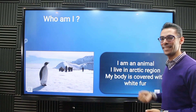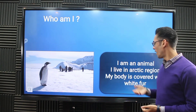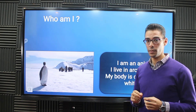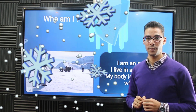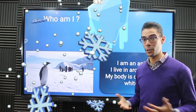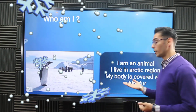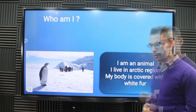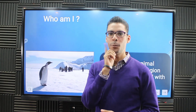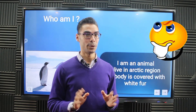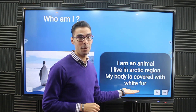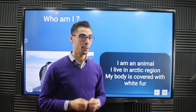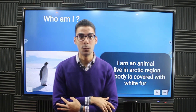Let's get it started. I'm an animal. I live in the Arctic region — the Arctic region also means a very cold place, polar climate, very cold there. My body is covered with white fur. White fur means I'm not a bird — here is a mammal. A mammal that lives in a very cold place and whose body is covered with white fur.